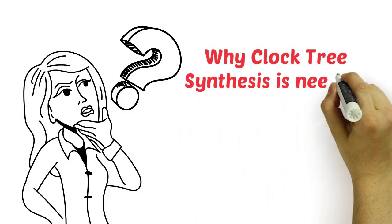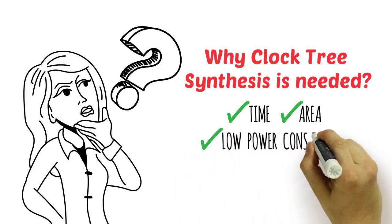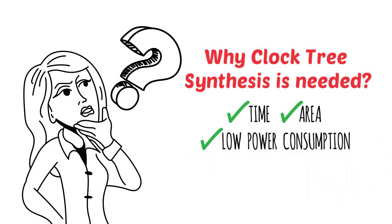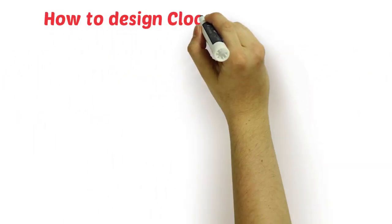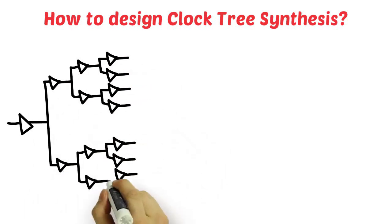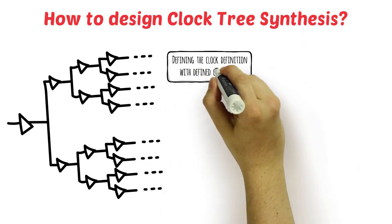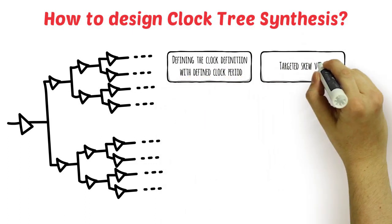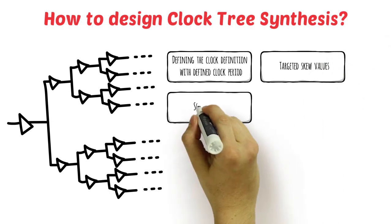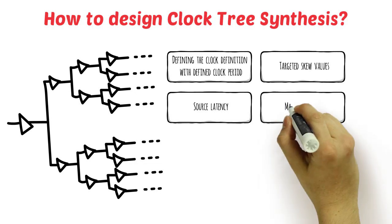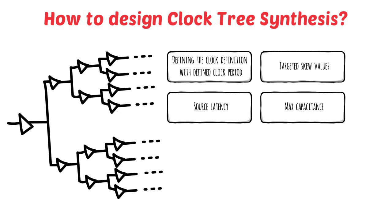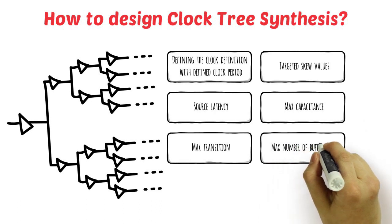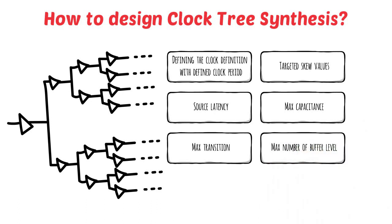Let us first understand why clock tree synthesis is needed. It helps in providing the clock connection to the clock pin of a sequential element in a required time and area, with low power consumption. At the initial stage, the following steps are required in designing clock tree synthesis: defining the clock definition with the defined clock period, scheduling clock skew to target skew values, designing the clock tree with minimum source latency, setting maximum capacitance value for the clock pins in balancing the clock phase delay, and setting maximum transition in the clock net in order to reduce clock power dissipation and clock cell delays.